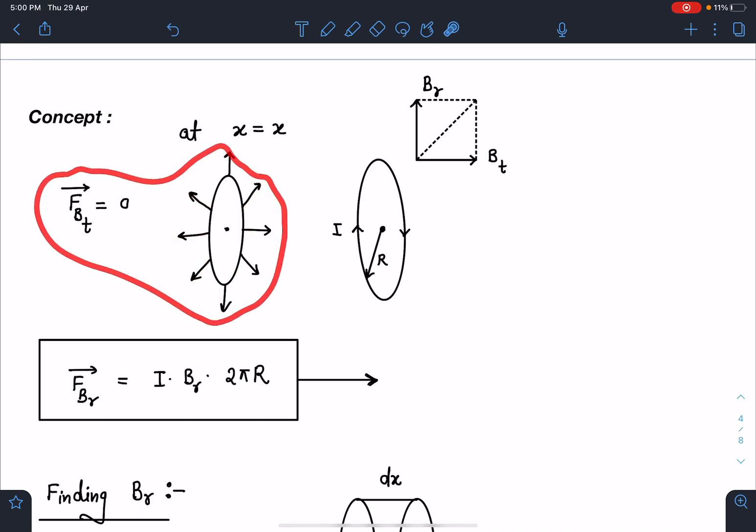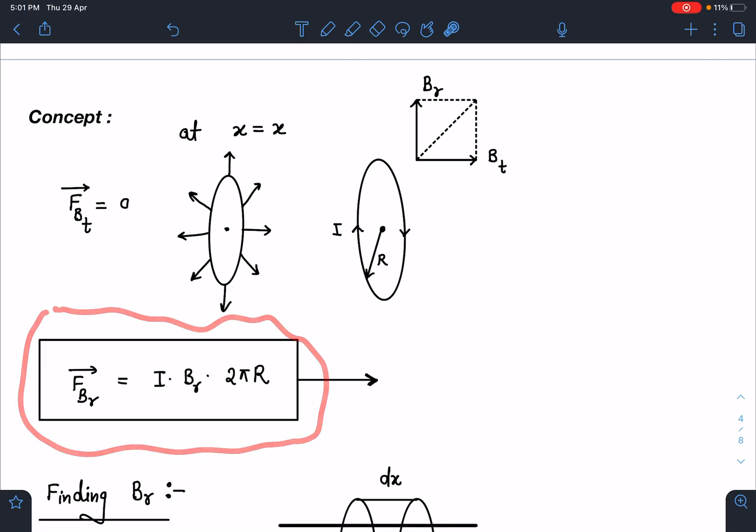However, this Bᵣ is going to act like this. If you see i dl cross B, all these components will come parallel to x, so all these components will be added together on the ring. I can write this magnetic field due to this Bᵣ component, the radial component, which is i Bᵣ into dl. Integral dl will give us 2πr. So now this is the force which is going to pull the ring and eventually the disk also. Somehow we have to find this Bᵣ part.